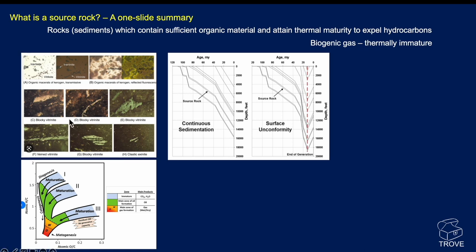Not all of these macerals will actually generate oil. They may go through the oil window, but if they don't have the constituent parts — the chemistry that's going to generate oil — they may have to wait until they get past this threshold and get into the gas-generating window. We can get some basins where the source rock essentially just experiences continuous sedimentation: it gets buried deeper and deeper, hotter and hotter, and starts generating hydrocarbons.